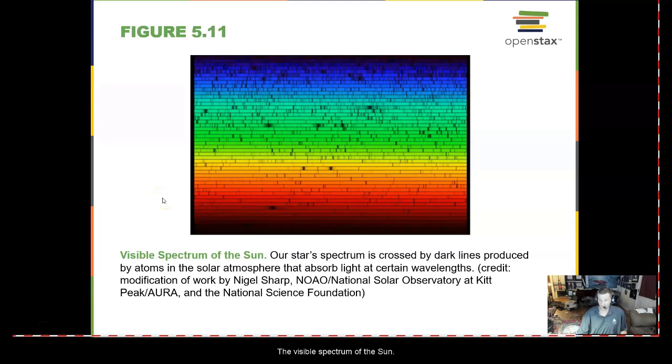The visible spectra of the sun shows many areas of dark lines. These dark lines represent what the star is made up of on its surface and in its atmosphere. And so we can see what the sun is made up of by these dark absorption lines.